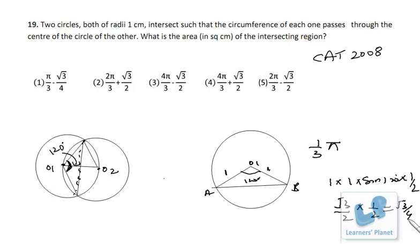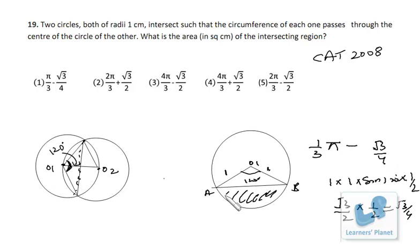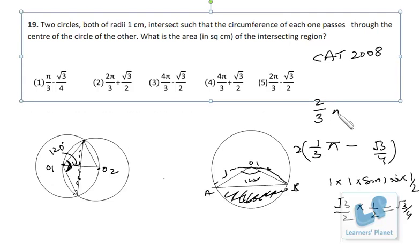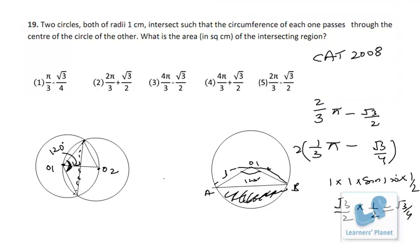The area of the triangle is √3/4 and the area of the complete sector is π/3. So the area of one segment equals π/3 minus √3/4. The intersecting region is double that, so the total intersecting area equals 2π/3 minus √3/2. That is the final answer.